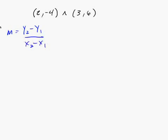Let's say we're given the points 2, negative 4, and 3, 6. So the first thing you want to do is find the slope of these two points. m equals y2 minus y1 over x2 minus x1.